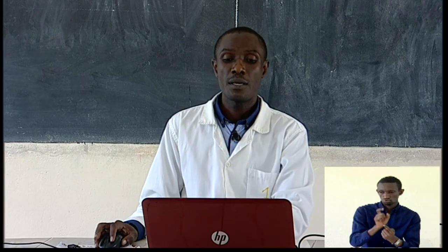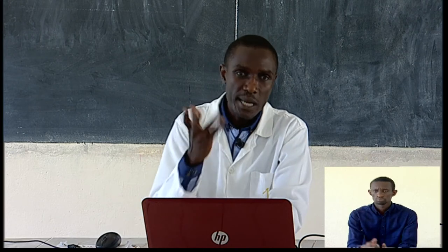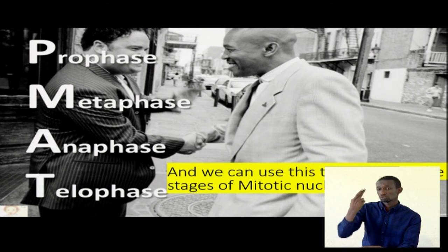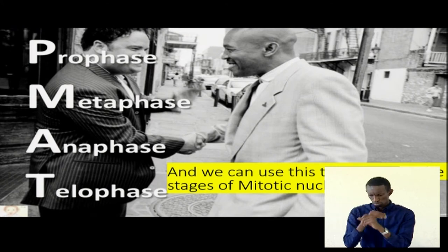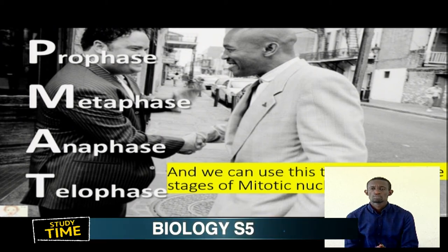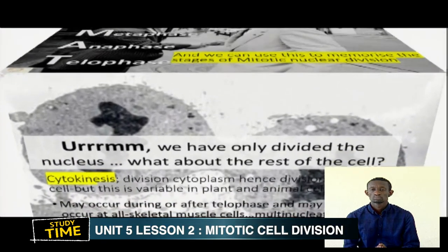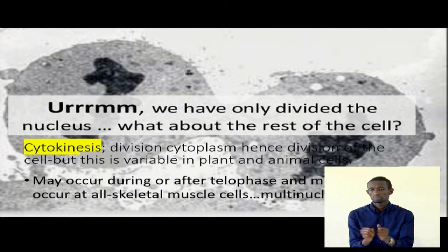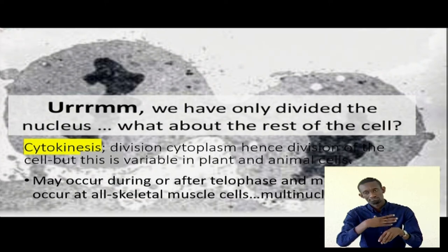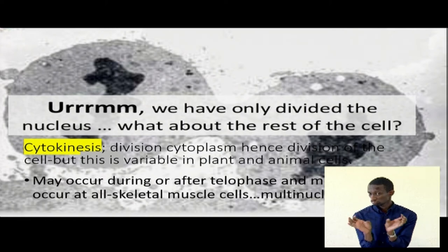But the question is, is that all? Do we finally have the two cells? Is there something we are missing out here? What exactly is happening? How do we differ from plant cells? So there is something else we need to look at. We've just divided the nucleus, but we are still within the same box. You just got your job, you're still at home, you haven't got your own house — time to pack and go. So finally, we get this cell dividing. The cytoplasmic content has to be shared.